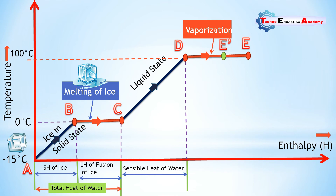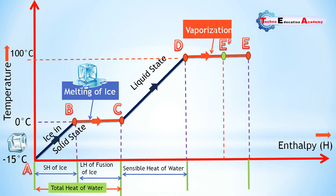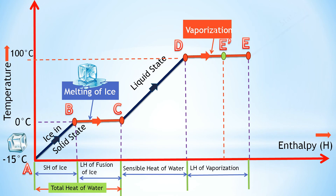The wet steam contains some water particles in suspended form, represented by point E-dash on the T-H diagram. When heat is supplied beyond point E-dash, the steam carries sufficient heat energy to maintain all the water in gaseous state — this is known as dry saturated steam, represented by point E on the temperature-enthalpy diagram.